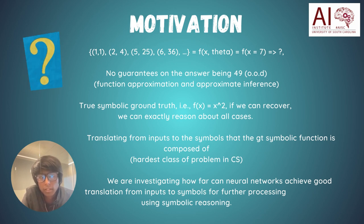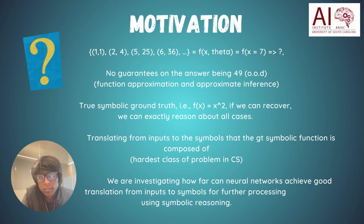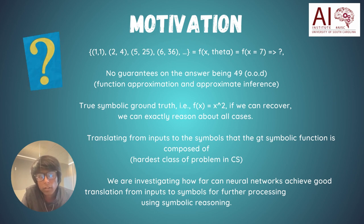On the other hand, if we had the true symbolic ground truth — the symbolic description of the function — we can exactly reason about all cases and we don't have to worry about out-of-distribution examples. Therefore, translating from inputs to symbols that the ground truth symbolic function is composed of is beneficial. However, it is a really hard class of problem in computer science. We are investigating how far neural networks can achieve translation from data-level inputs to symbols for further processing using symbolic reasoning methods.